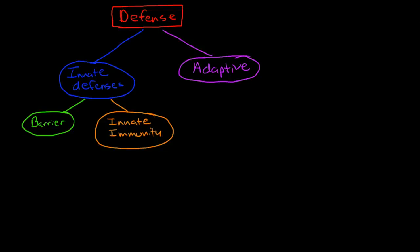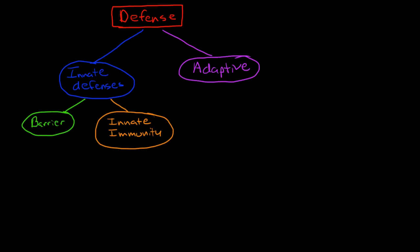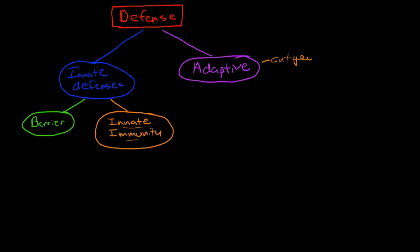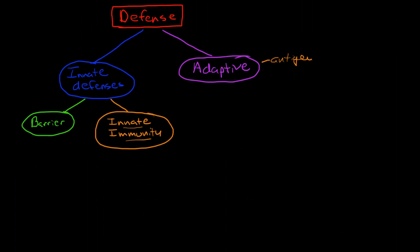In the previous video, we were talking about generally the defense system, and we talked about how the defense system basically had two branches: the innate defenses and the adaptive or antigen-specific defenses. The innate defenses were further broken down into barrier defenses, which include skin and mucous membranes, and innate immunity. We talked significantly about the barrier defenses in the last video, and in this video, we're going to focus on the innate immune system.